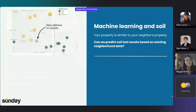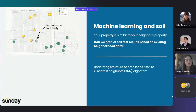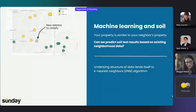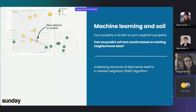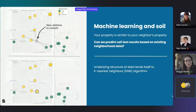We thought: if your property is similar to your neighbor's property, could we predict soil test results based on the existing neighborhood data that we have? The structure of our data lends itself to the K-nearest neighbors algorithm, where the prediction of a new data point — like a new address in a neighborhood — is based on the class of your nearest neighbors. So if we wanted to classify this gray point here, we could look at the five nearest neighbors. Three of them are yellow, two of them are green, and the majority wins. So this new address would be classified as yellow.